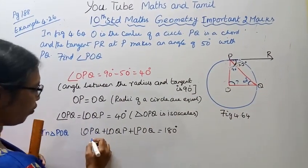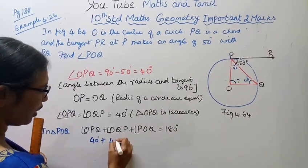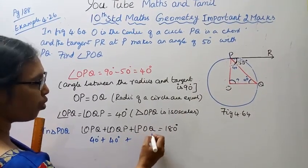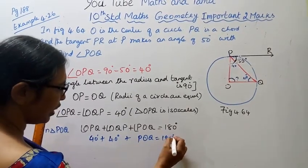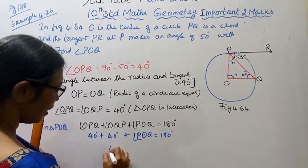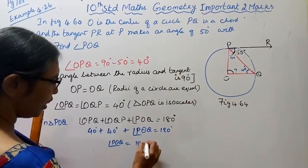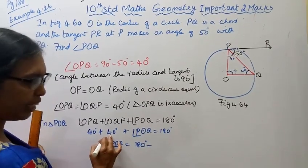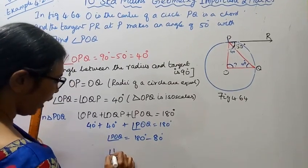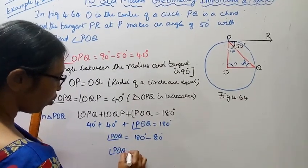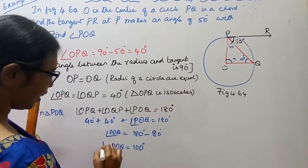Angle OPQ is 40 degrees, angle OQP is 40 degrees. The sum of angles in triangle POQ equals 180 degrees. Therefore angle POQ equals 180 minus 80, which equals 100 degrees.